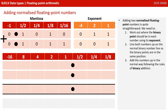Adding two normalised floating point numbers is actually quite straightforward. We need to: one, work out where the binary point should be in each number by using the exponent; two, line up both numbers on the normal binary number line so the binary points are in the same position; and three, add the numbers up in the normal way following the rules of binary addition.